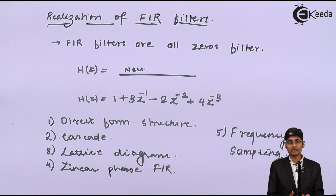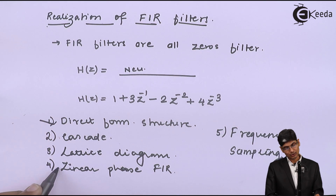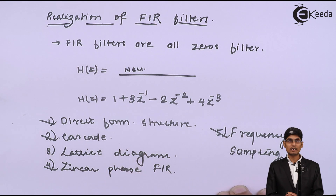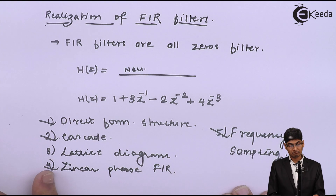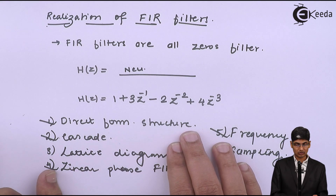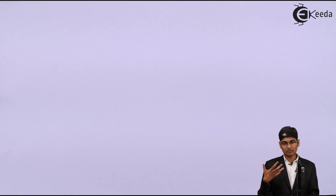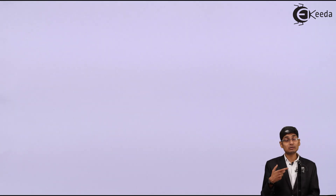We will take structures 1, 2, and 3 together, then frequency sampling, and lastly lattice diagrams. We will start understanding direct form structures, cascade structures, linear phase structures, and frequency sampling structures. We need to take up problems to realize and understand each system — we will not be deriving the theory of how coefficients are developed, but we will take up problems so you become familiar with how to use the structures.